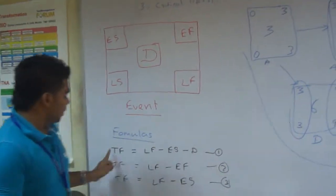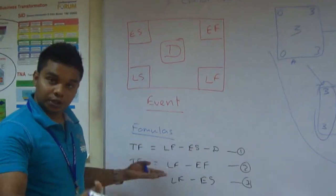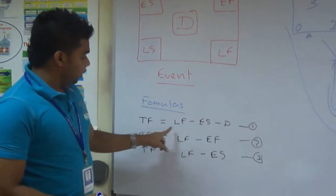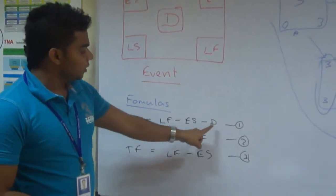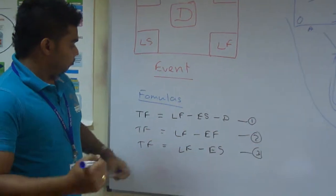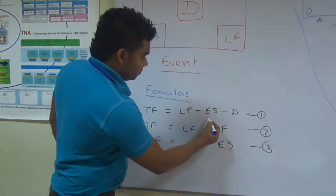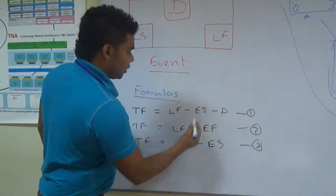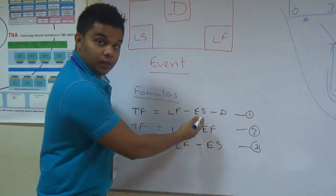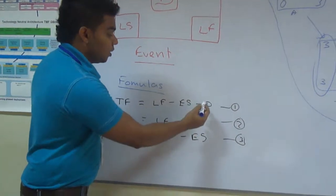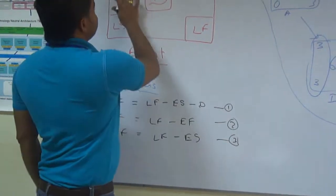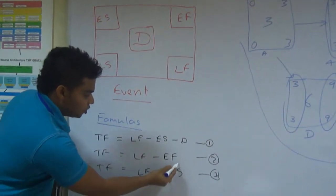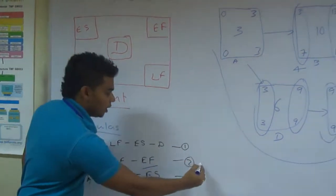So I have given TF stands for total float. A float for an event or it can be for the whole project as the question asked from you. The equation is TF equals LF minus ES minus D. Here. You can take the minus sign out and you have ES plus D. Your ES plus D you get your EF. So I can substitute here EF. That's we have another equation.